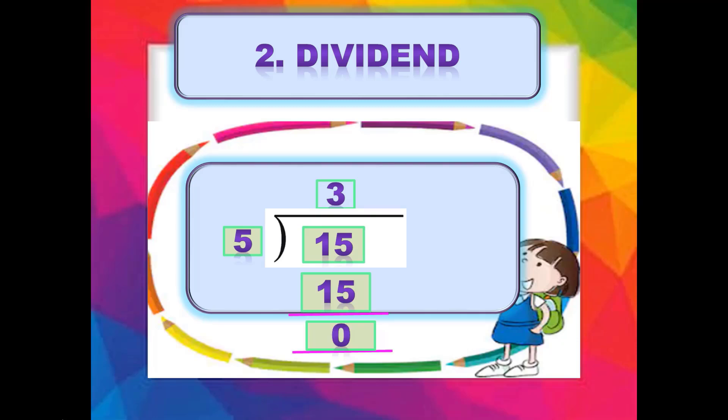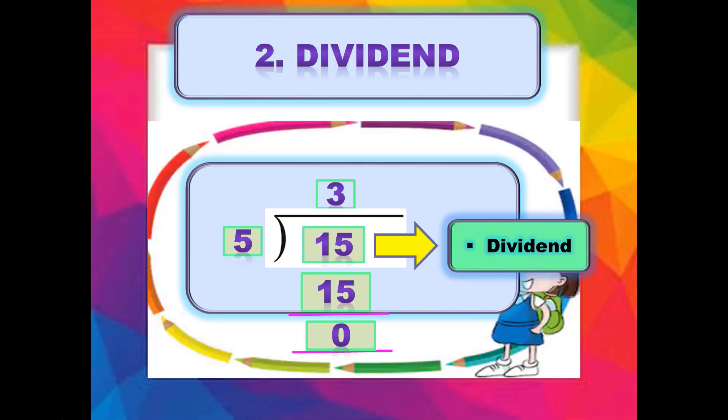Ab long division میں دیکھتے ہیں — division کے sign کے نیچے کون سا number ہے؟ 15۔ 15 بڑا number ہے اور 5 sign سے باہر چھوٹا number ہے۔ جو number بڑا ہے اور division sign کے نیچے لکھا ہوا ہے، that will be our dividend۔